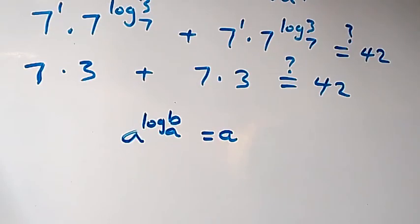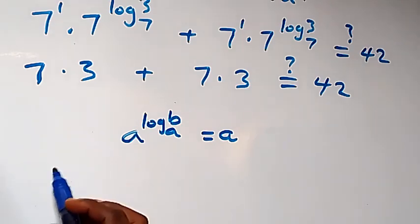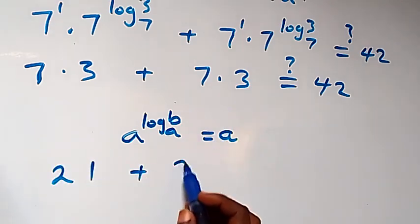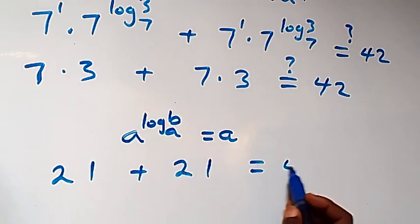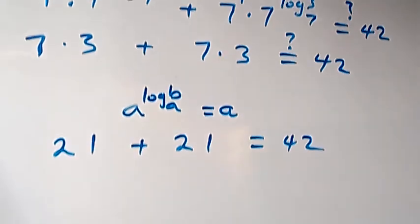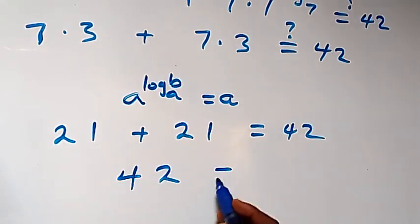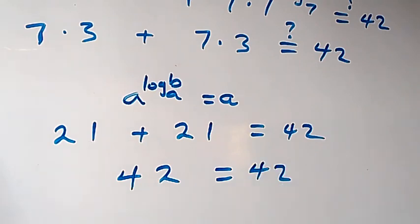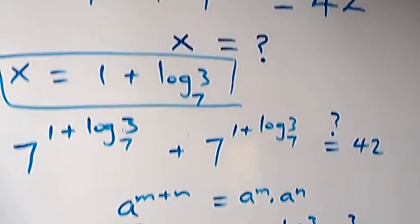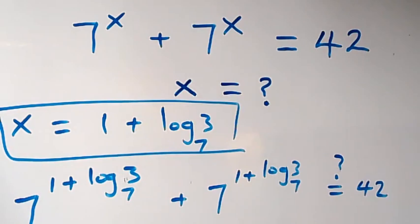From what we have here, 7 times 3 is 21, plus 21 equals 42. And 21 plus 21 is of course 42, which equals 42 — the left-hand side equals the right-hand side. We can conclude that x equals 1 plus log 3 to base 7 satisfies this given problem.